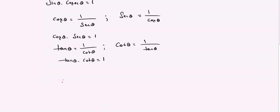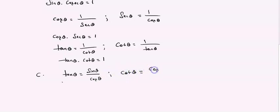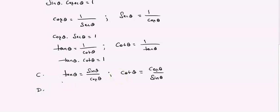A very important ratio you should know is the quotient relation. Tan theta can be written as sin theta by cos theta. And cot theta can be written as cos theta by sin theta. In case you do not know how to remember all these formulas, I have made a video on how to remember the formulas in my previous episode — you can go to the playlist. Here I am using direct formulas.